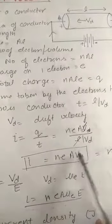And now what is current? The formula for the current I told you in the previous video, that is Q upon T. What is Q? NEAL. And now T is L upon Vd. And it becomes equal to NEAVd. And now this is the expression for the current in terms of drift velocity.